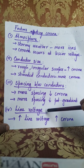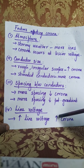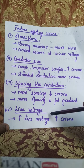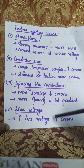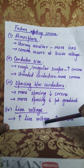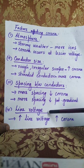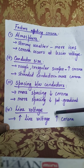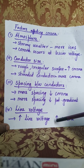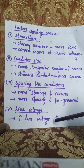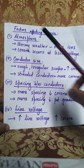The last factor is line voltage. As the potential gradient equals voltage divided by distance, voltage is directly proportional to potential gradient. So for transmission lines with a higher line voltage, the corona occurrence will be more. These are the four factors which affect corona: atmospheric factors, conductor size, spacing between conductors, and line voltage.